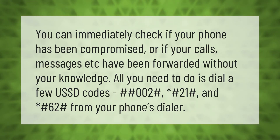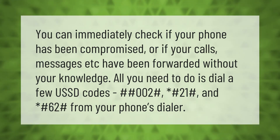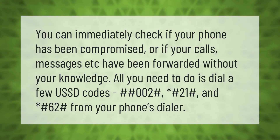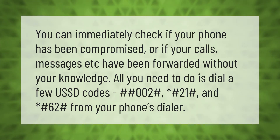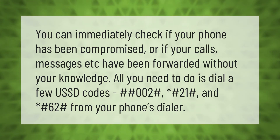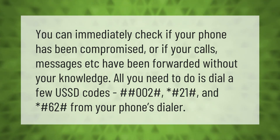You can immediately check if your phone has been compromised or if your calls, messages, etc. have been forwarded without your knowledge. All you need to do is dial a few USSD codes: ##002#, *#21#, and *#62# from your phone's dialer.